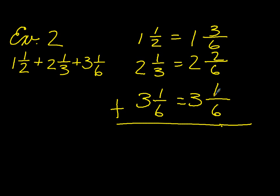We add them up. We end up with six-sixths, and six for our whole number. So six and six-sixths is equal to seven.